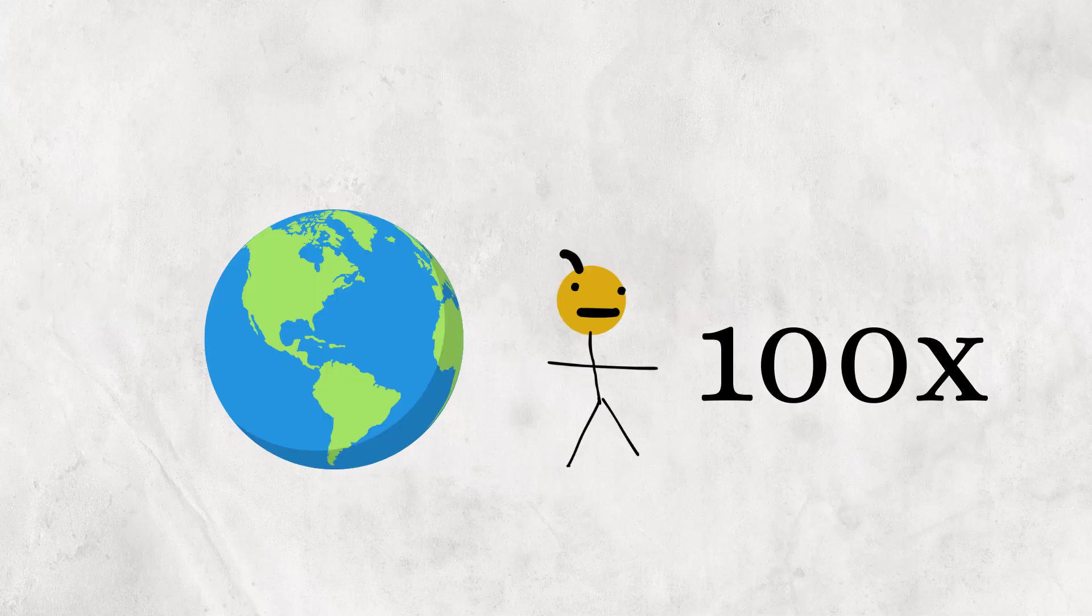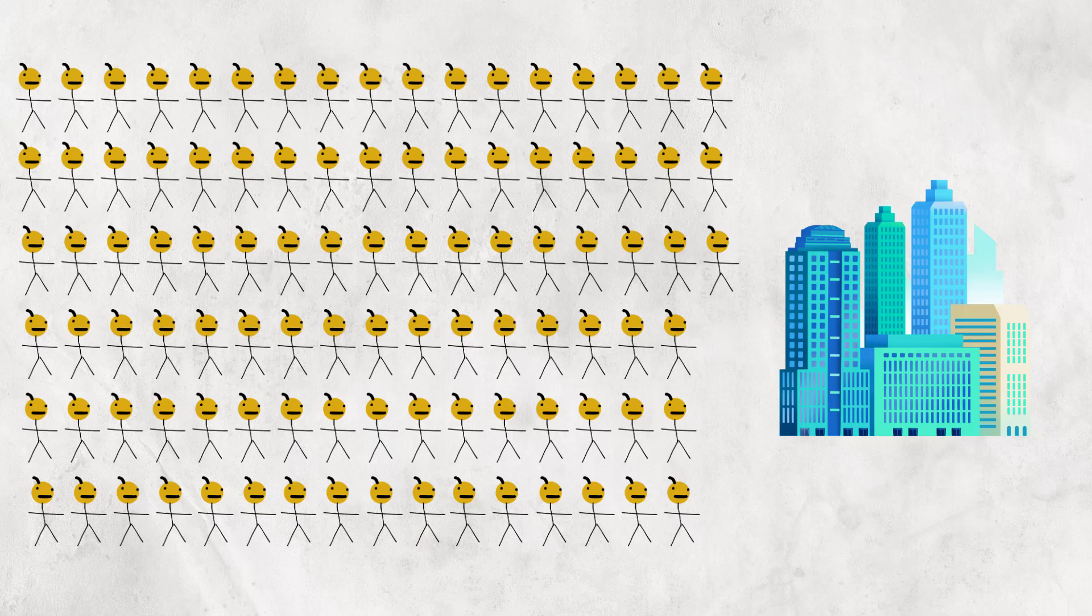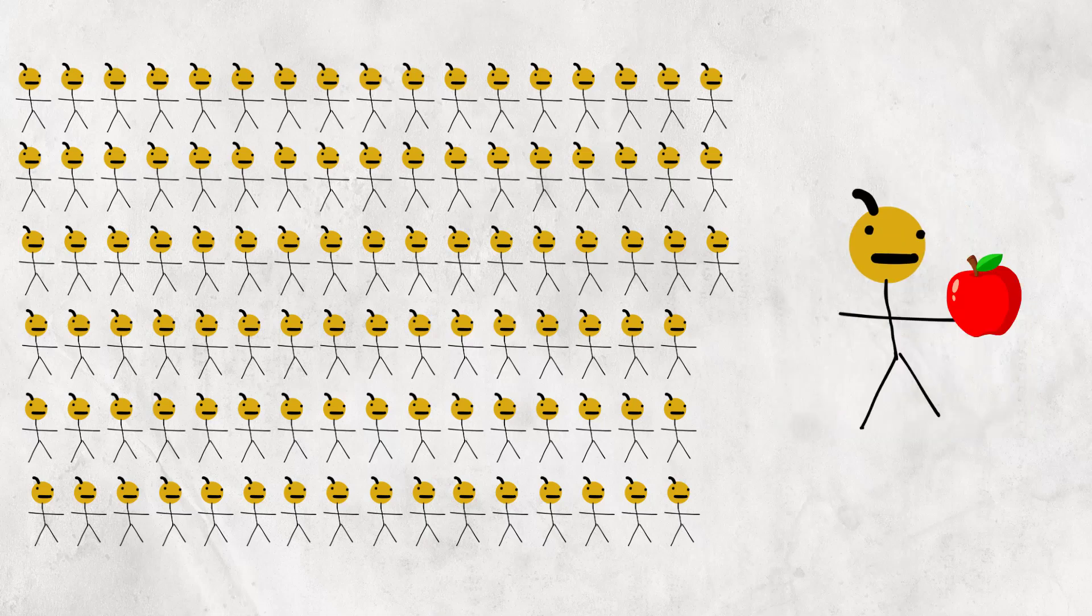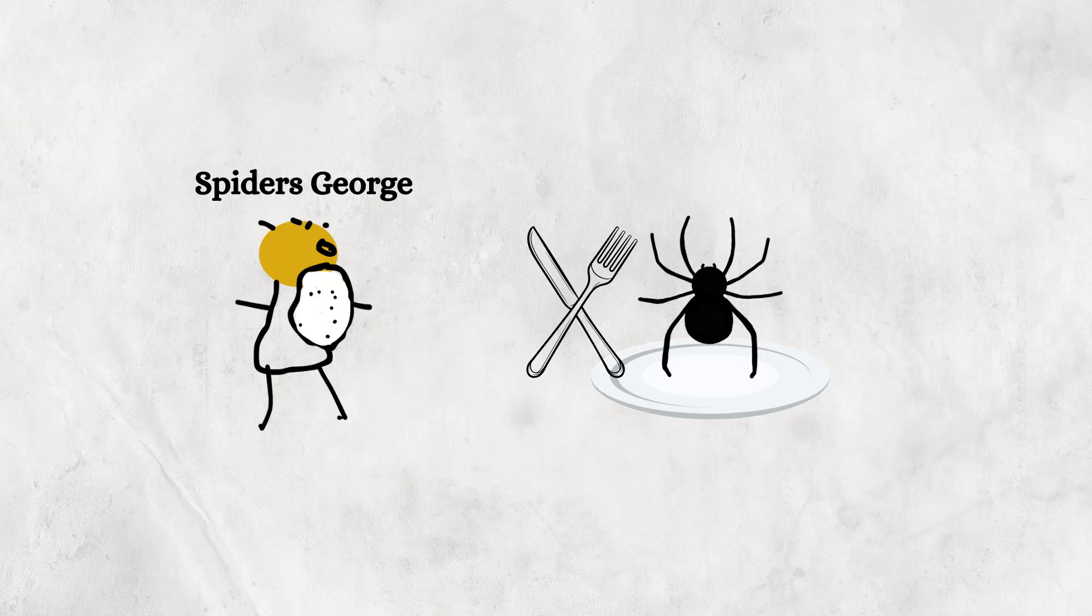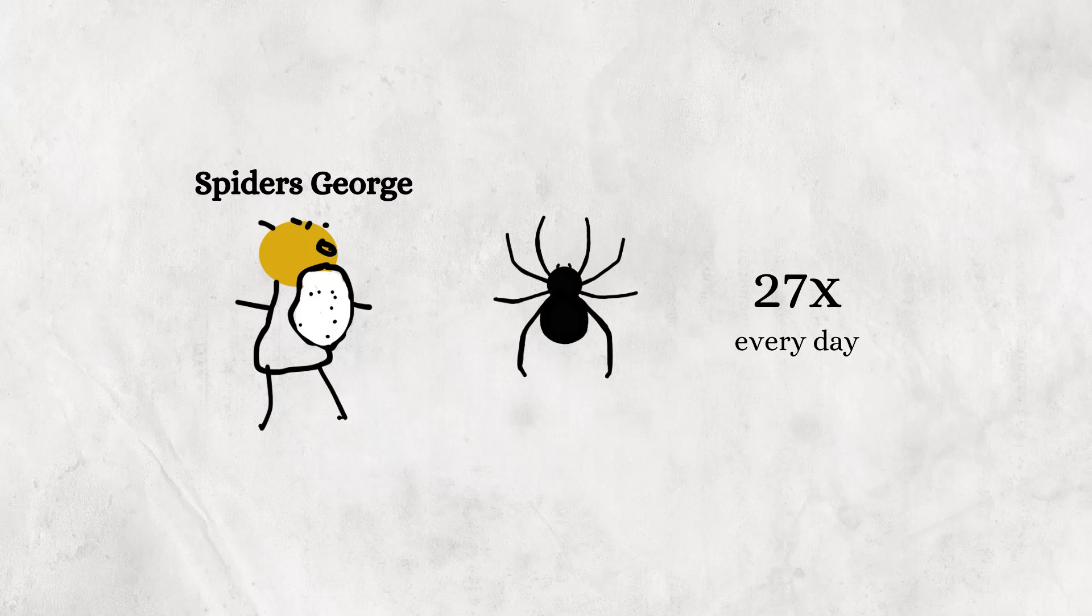Imagine a society consisting of 100 people. 99 of them live in the city and live normal lives and eat normal food. The last guy meanwhile, Spiders Georg, lives in his man cave outside the city and really loves eating spiders. In fact, his daily meals consist of 27 spiders every single day, meaning he chomps down approximately 10,000 spiders in a given year.